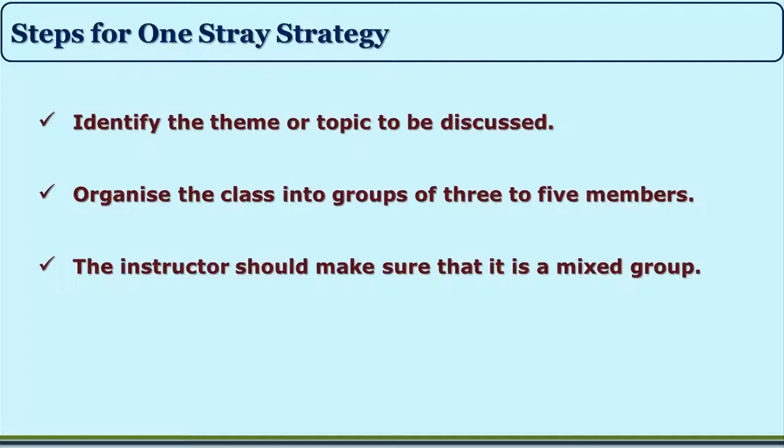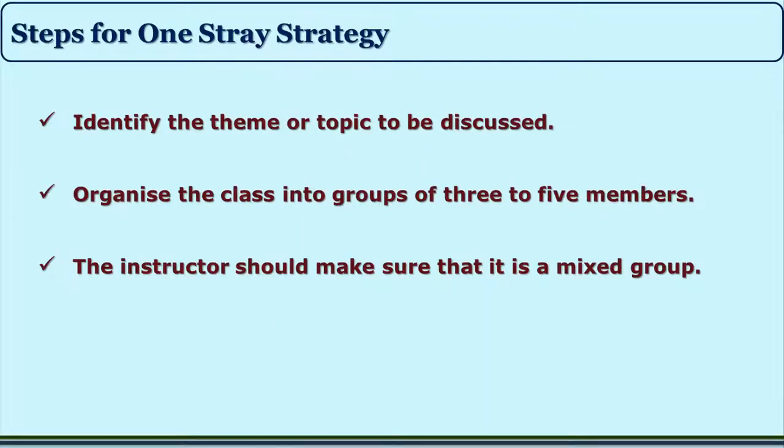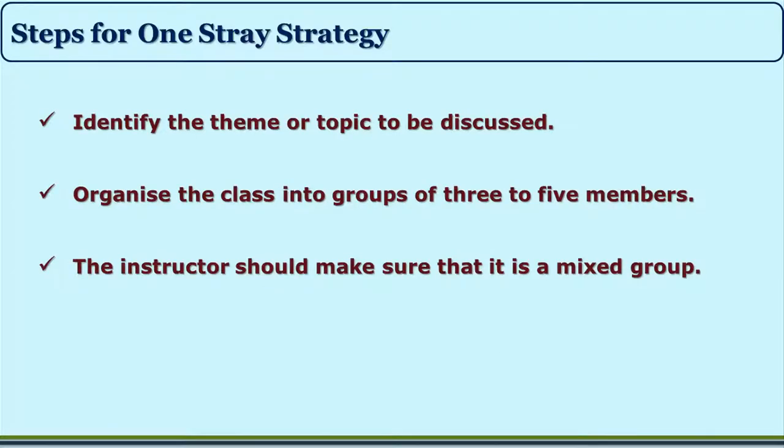The first step is to identify the theme or topic to be discussed. The teacher selects a topic, a question, or a situation which needs discussion. The second step is to organize the class into groups of three, four, or five members. The teacher can take the lead in organizing the groups, or may leave the decision to the students. The third step is to ensure it is a mixed group with students of varying abilities and skills.